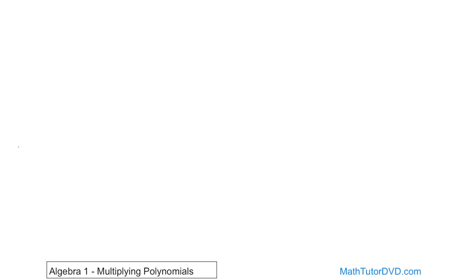Now we're going to have a problem like this — it's easier to show you rather than tell you. What if we had (a + 2) multiplied times (a² + 3a + 5)? You see, this is not a binomial times binomial like last time. This is a binomial times a trinomial — two terms times three terms — and you can have even more complicated problems: two terms times four or five terms, or three terms in front and four terms in the second set of parentheses.